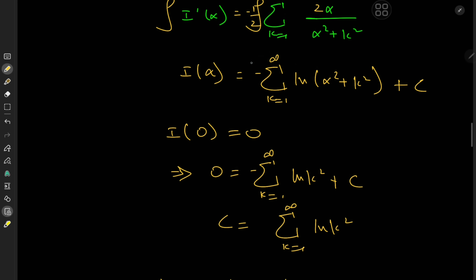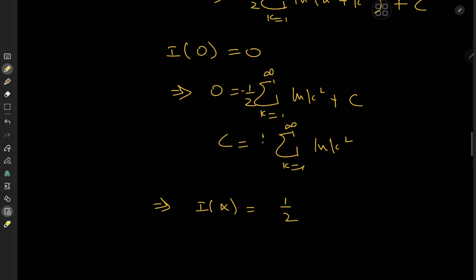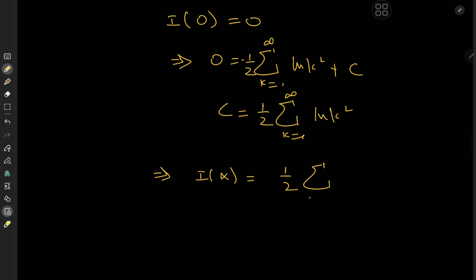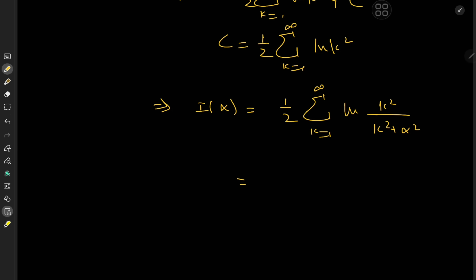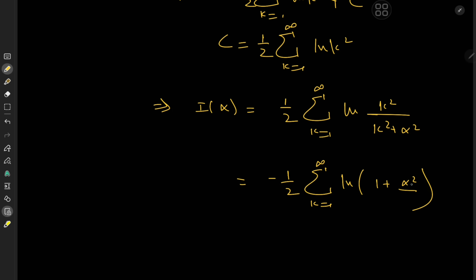Plugging the constant back in, I(α) equals negative one half of the sum over k from 1 to infinity of log(k squared plus α squared over k squared), which simplifies to negative one half of the sum over k from 1 to infinity of log(1 plus α squared over k squared). You might wonder how to evaluate an infinite series of logarithms — but it turns out to be easy, because we have a certain factorization of the sine function.